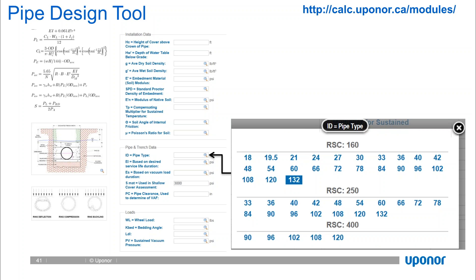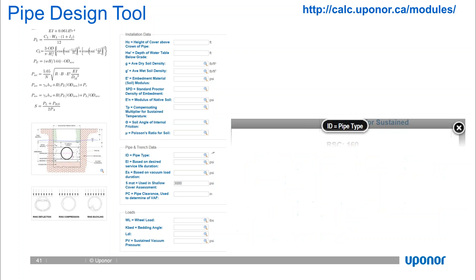RSC values indicate material thickness or gauge. We have RSC 160, RSC 250, and RSC 400—with RSC 400 being heavier and stronger than RSC 160. These are strength and thickness indicators. The ring stiffness constant increases from 160 to 250 to 400 to indicate increasing material strength.